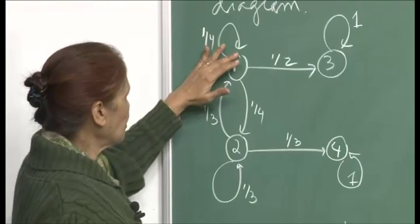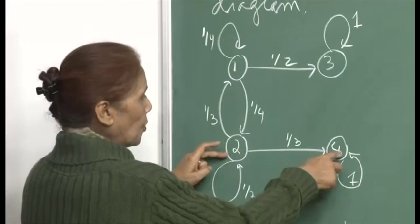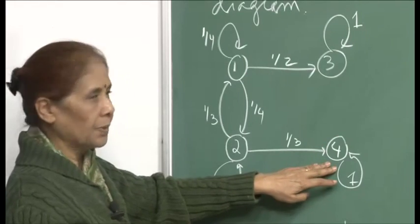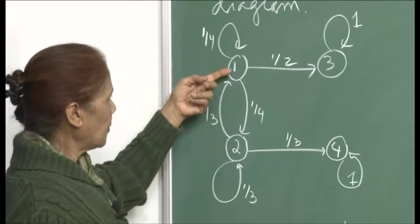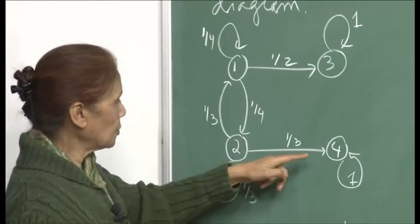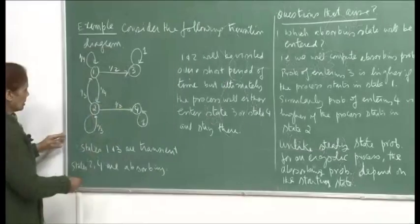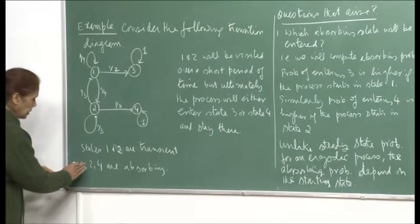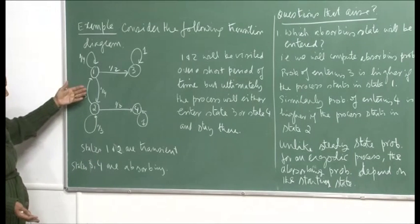Similarly, from 1 it can go to 2, and from 2, if it transitions finally to 4, then 4 is an absorbing state and the process will again stop here. From 2 also, you can go to 1 and 3, or 2 to itself, and 2 to 4. So 1 and 2 are transient and 3 and 4 are absorbing, which you can immediately see just by looking at the transition diagram at once.